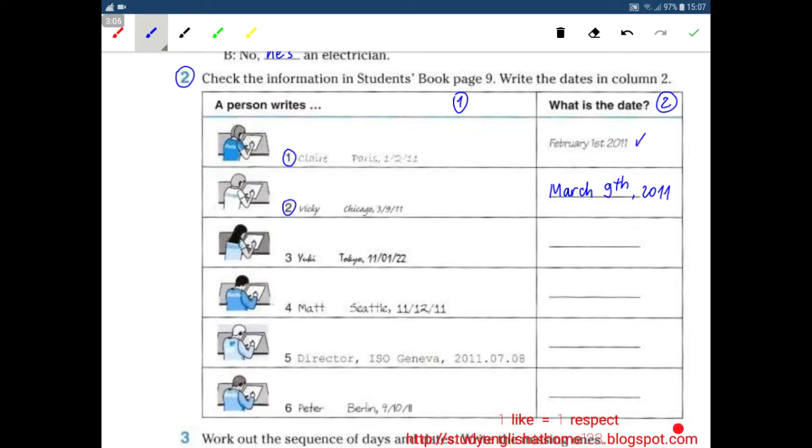Next, number 3 Yuki Tokyo 11, is January 11. No, in Japan will be this is the year, this is the month and this is the date. Year, month, day. So it's January 22nd 2011.